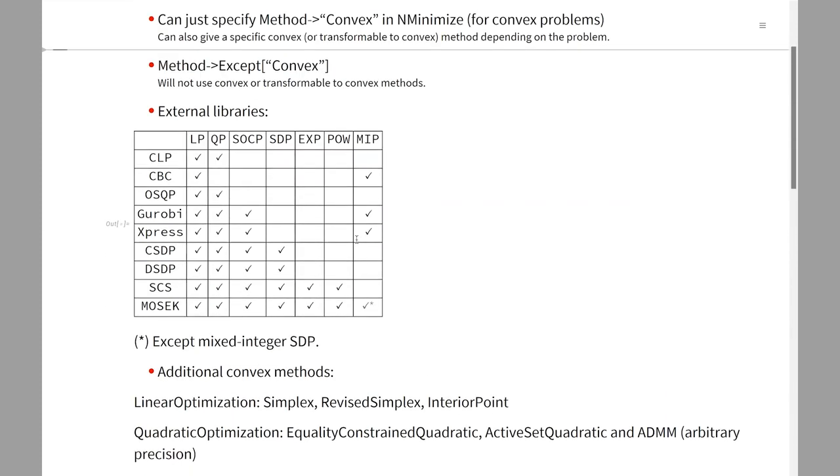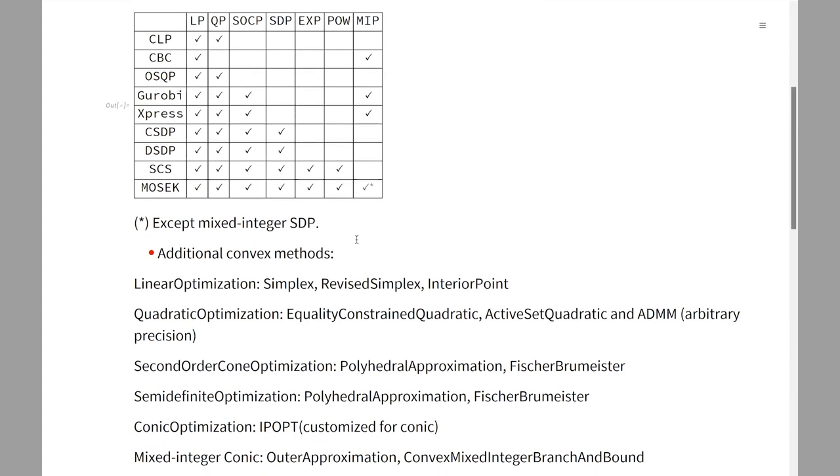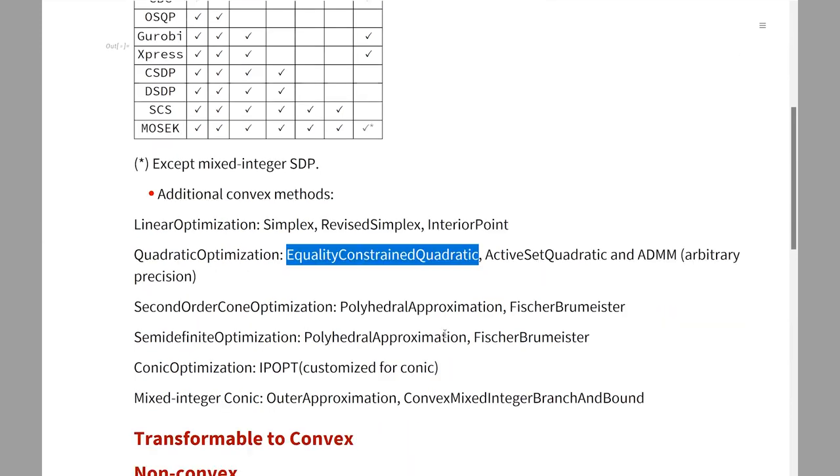When you want to solve the problem with machine precision, they're automatically picked up. For non-machine precision, there are different algorithms that were done in-house. Also, if you have machine precision but some very specific problem like equality-constrained quadratic, the default method will use a very efficient algorithm that we have by default too.